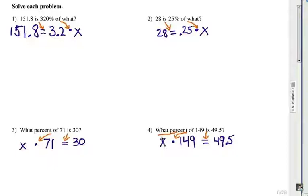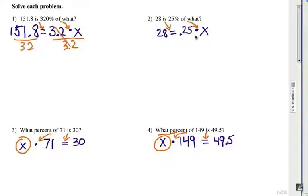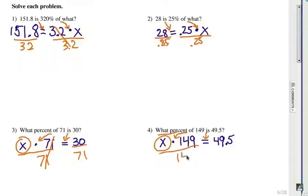In these cases the percent is missing, so you have x. Now to solve these depends on what kind of equation it is. Here you're going to divide by 3.2 on both sides, and that will give you your answer. Here, same thing, but you're going to divide each side by 0.25. On both of these you're going to divide by the 71 number, because you want to get x by itself. And here you're going to divide both sides by 149. It depends on what kind of equation you have.